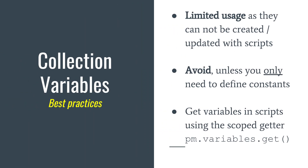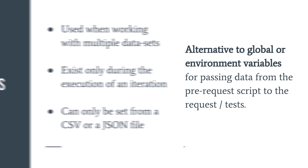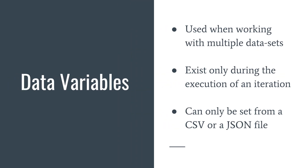The usage is limited since collection variables cannot be created or updated from scripts. If you're already using environment variables, I'd advise avoiding collection variables because it makes editing harder — some variables would be in the environment and others in the collection, which is inconsistent. For getting collection variables in scripts, there isn't even a specific scripting API, so you have to use the scoped getter pm.variables.get.